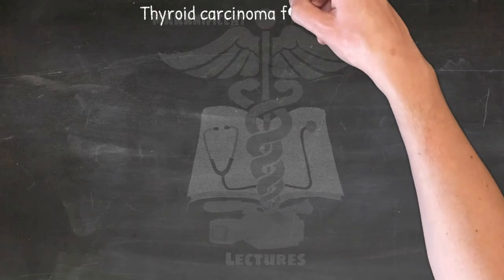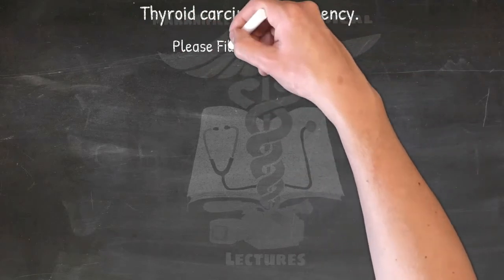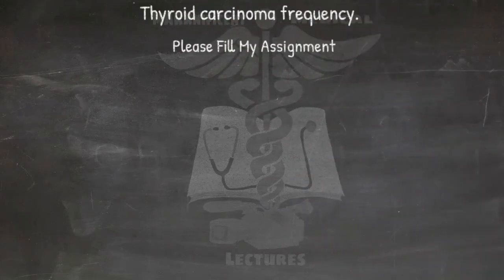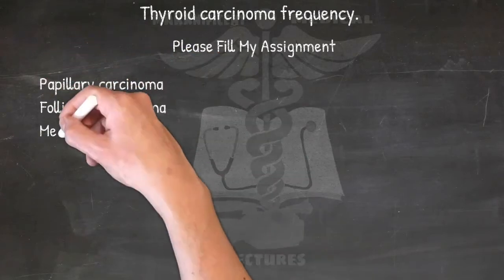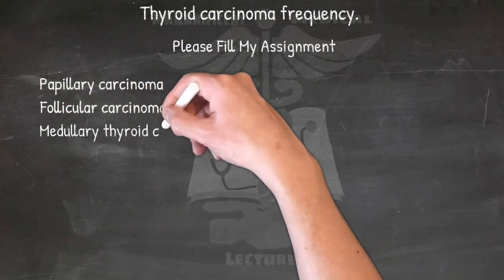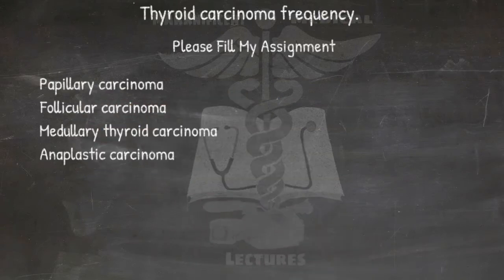Thyroid carcinoma frequency: in order of most frequent to least frequent, and from least aggressive to most aggressive — Papillary carcinoma, Follicular carcinoma, Medullary thyroid carcinoma, and Anaplastic carcinoma.